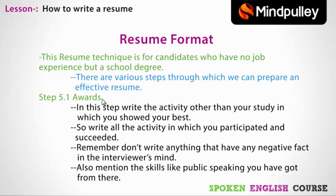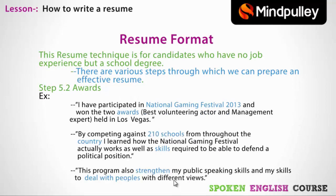The next step is Awards. In the awards section, write activities other than your studies in which you showed your best performance. Write all the activities in which you participated and succeeded. Remember, don't write anything that would have a negative effect in the interviewer's mind. Also mention skills like public speaking that you gained. For example: 'I participated in national gaming festivals in 2013 and won two awards — Best Volunteering Actor and Management Expert — held in Las Vegas, competing against 210 schools from throughout the country. I learned how education gaming festivals work, as well as the skills required to defend a political position.'